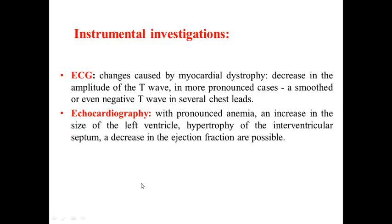Instrumental investigations such as ECG and echocardiography show hypochromic myocardial dystrophy with decreased amplitude of the T wave. In more pronounced cases, there is a smooth or negative T wave in several chest leads, giving us information about ischemia. ECG and echocardiography changes depend on the severity and duration of the anemia.